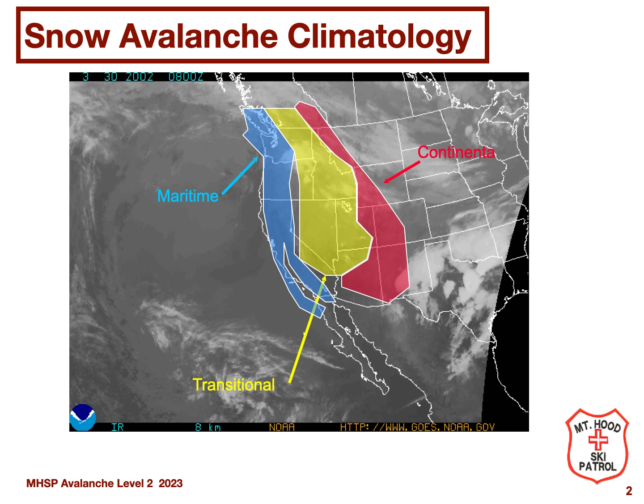The avalanche-prone areas of North America can be divided into three regions, each with unique weather climates and snowpack characteristics. These regions are the maritime region, heavily influenced by the Pacific Ocean; the continental region, which is heavily influenced by Arctic air masses from Alaska; and the transitional region, which is a mix of maritime and continental. Let's look at the characteristics of each of these.